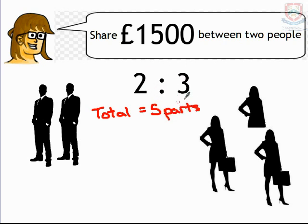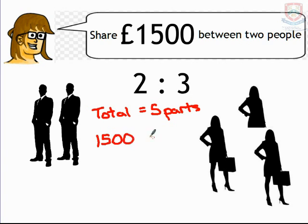So by adding the ratio together, we find out what it is that we're going to be dividing by. So now we know that we've got five parts, we can split the £1,500 between those five parts. Whatever amount you're trying to split, you divide it by the total number of parts in your ratio. £1,500 divided by 5 equals £300.